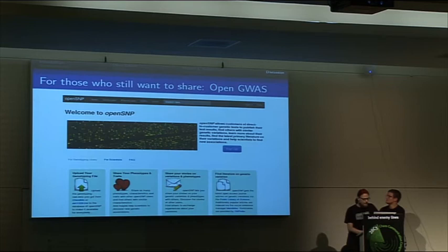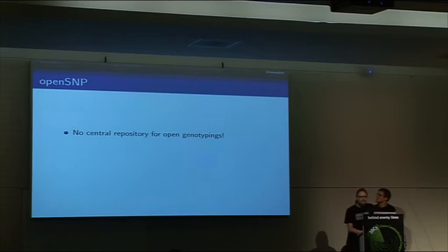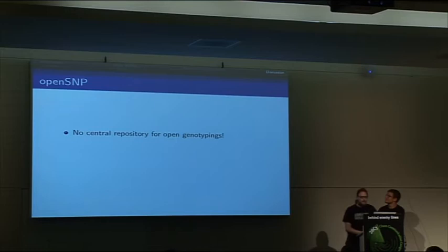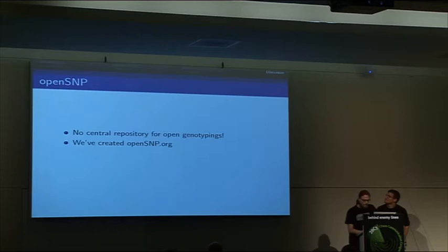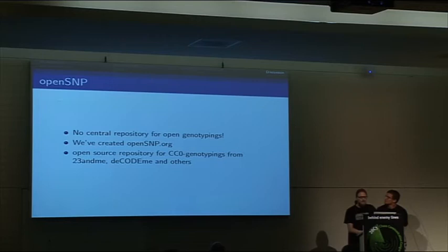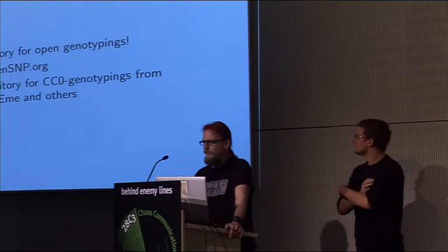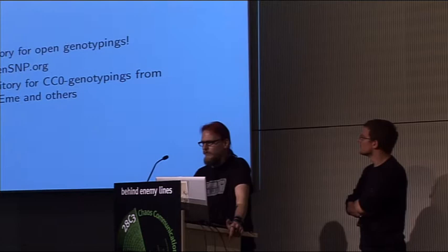Up until then, there was no central repository for open genotyping. There were about 50 people who already uploaded their data to GitHub or SourceForge, and you had to do a lot of research to find all this data if you wanted to use it. Mostly there was no phenotypic information about diseases either. We've created it and people are using it already. The data is CC0 — essentially public domain — because we think genetic information should not be owned by anybody.